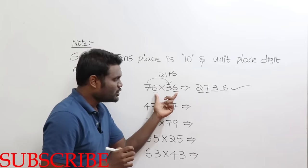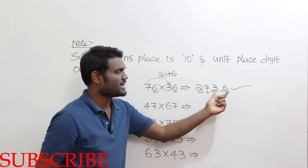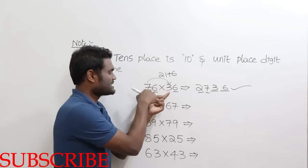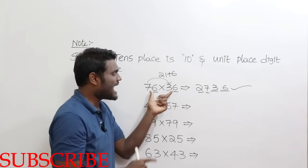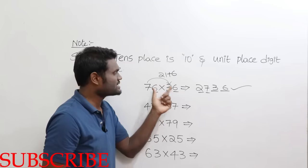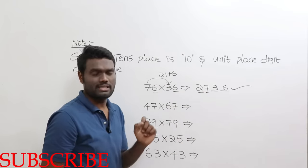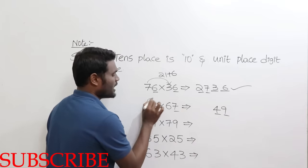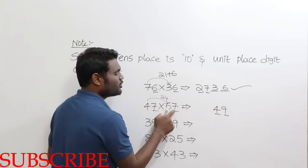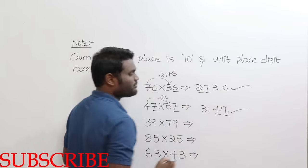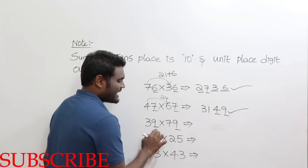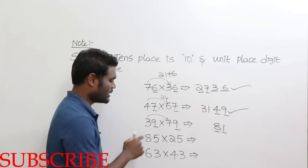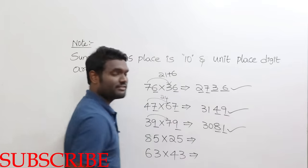Multiply the units place and write the last 2 digits: 6×6 = 36, so last 2 digits are 36. Multiply the tens-place digits: 7×3 = 21, then add the units digit 6: 21+6 = 27. For another example: 7×7 = 49 (last 2 digits), 4×6 = 24, 24+7 = 31, so the answer is 3149. Next: 9×9 = 81 (last 2 digits), 3×7 = 21, 21+9 = 30, so the answer is 3081.